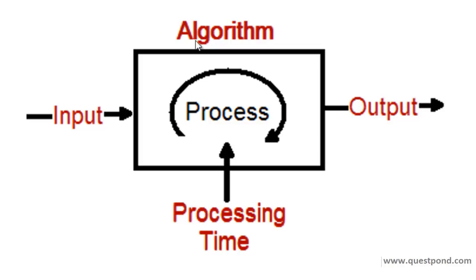When we talk about an algorithm, it has three important pillars. The first one is the Input, the second one is the Processing which takes place by the algorithm, and the final one is the Output. Big O Notation says that if the input data increases, at what rate will the processing time increase. It tells the relationship between the processing time and the increase of data.